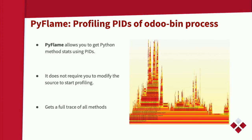PyFlame works by profiling the PID — the process ID — of another running process. It does not require you to modify the source code to start profiling, since it checks the trace of the process ID. You can start tracing without a restart and without applying a monkey patch. You can enable it on all workers, since each worker has a different PID, and you get a full trace of all methods.